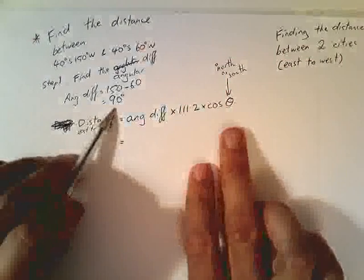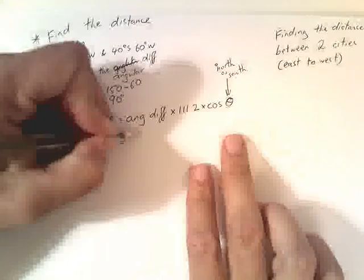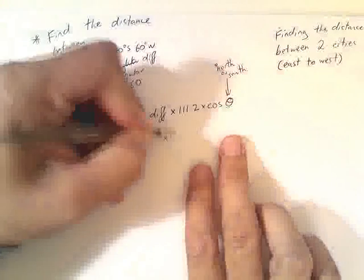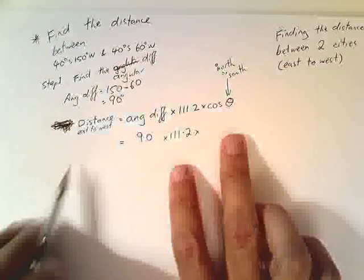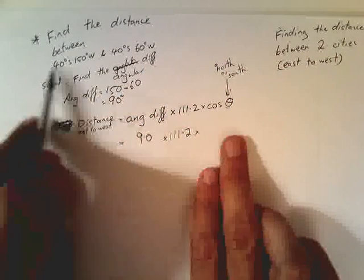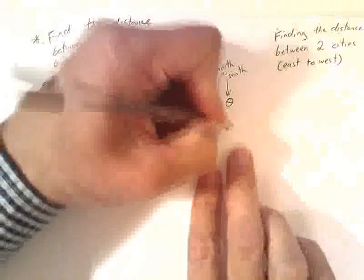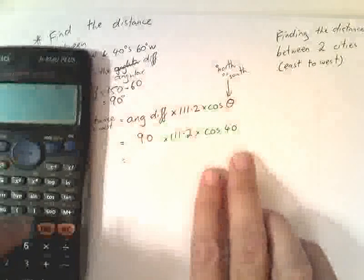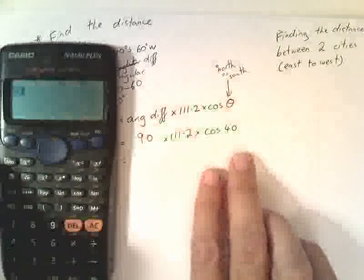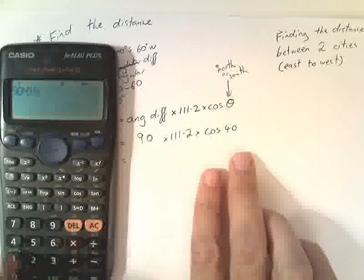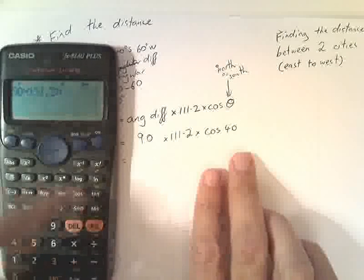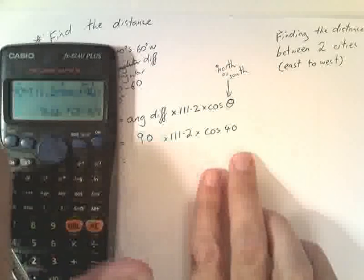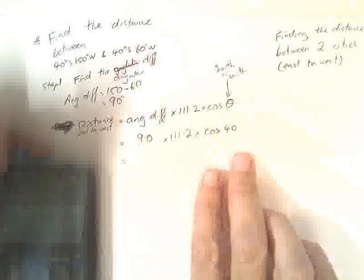Our angular difference we found earlier was 90 degrees. We multiply that by 111.2, and then we multiply that by cos 40. I'm just going to get my calculator out here: 90 times 111.2 times cos 40 equals 7,666.57.